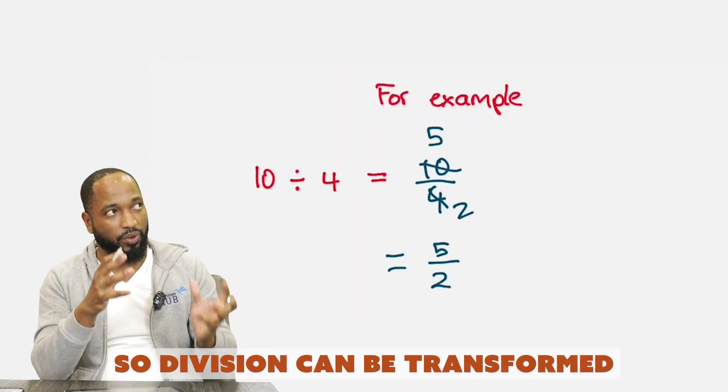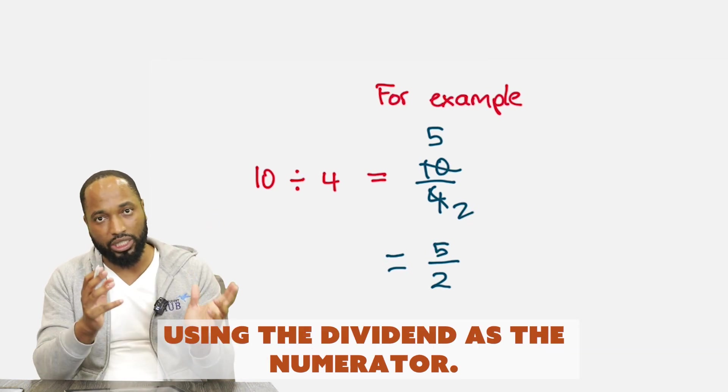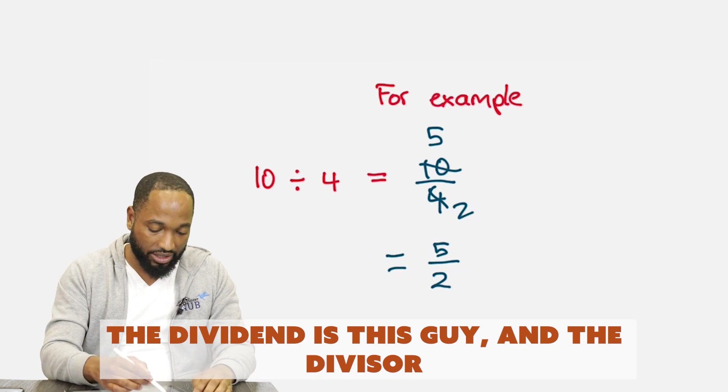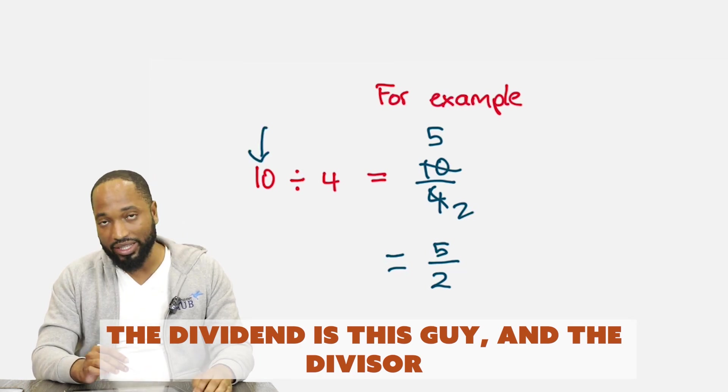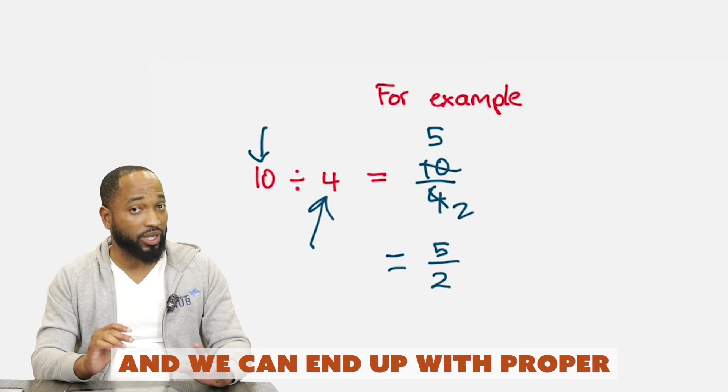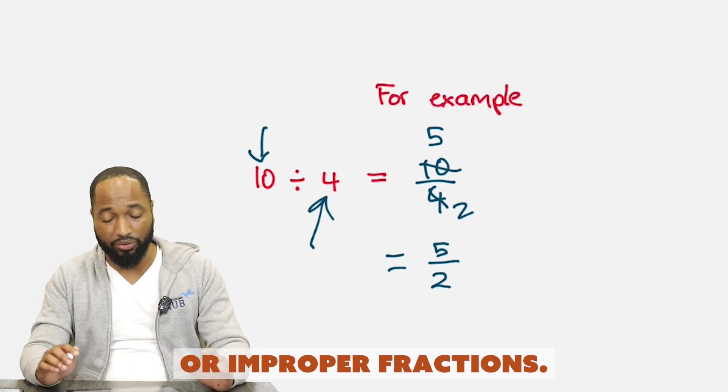Division can be transformed using the dividend as the numerator - the dividend is this guy - and the divisor as the denominator - the divisor is this guy. And we can end up with proper or improper fractions.